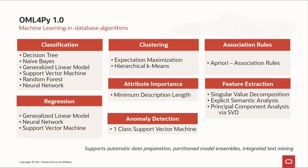For machine learning algorithms, OML for Python provides a natural Python API to the in-database algorithms listed here, supporting classification, regression, clustering, attribute importance, anomaly detection, association rules, and feature extraction. The in-database algorithms natively support automatic data preparation, partitioned model ensembles, and integrated text mining. Users can extend the set of algorithms with those provided — for example, in Python scikit-learn. In-database models produced through the Python API can also be accessed using the SQL API.